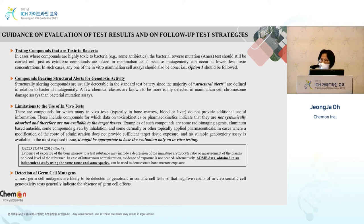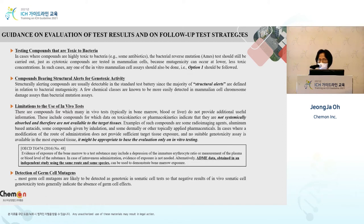Before we decide the follow-up test strategy, we need to decide whether we go for option 1 or option 2, and depending on the result, we need to decide what follow-up tests to conduct. In both options, we use bacteria for the reverse mutation test. The guideline says we need to go for option 1 for the bacterial reverse mutation test. If cytotoxicity is too strong or high, it is not easy to get the result, so by having in vitro testing at a low level, we can observe the mutagenicity. In vitro and in vivo can thus be integrated into one approach.